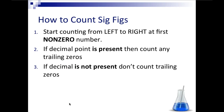So how do you count significant digits? Start counting from left to right at the first non-zero number. If you have a decimal present, count all the way to the end, including all the zeros. If you don't have a decimal, do not count zeros at the end of the number.